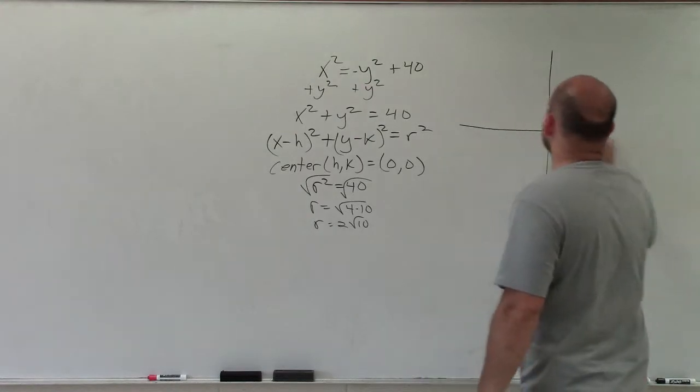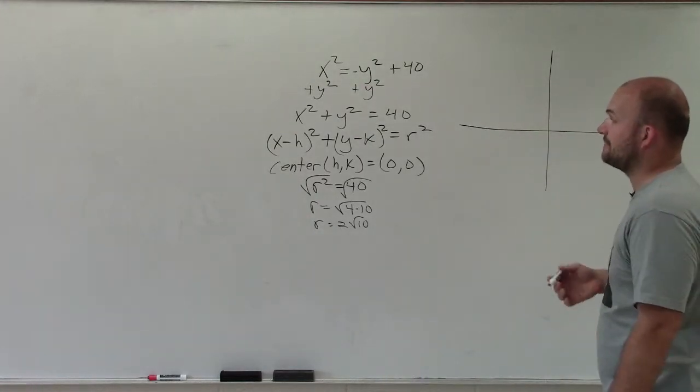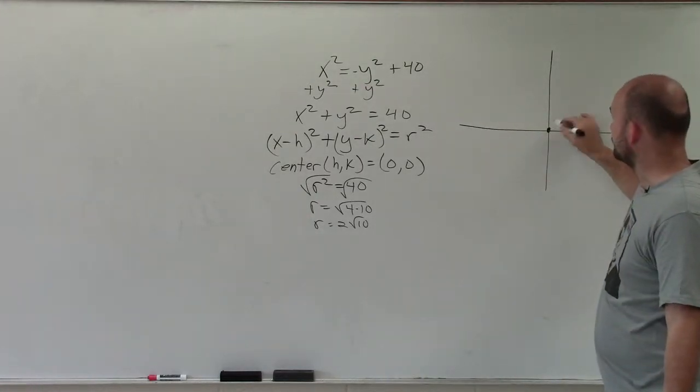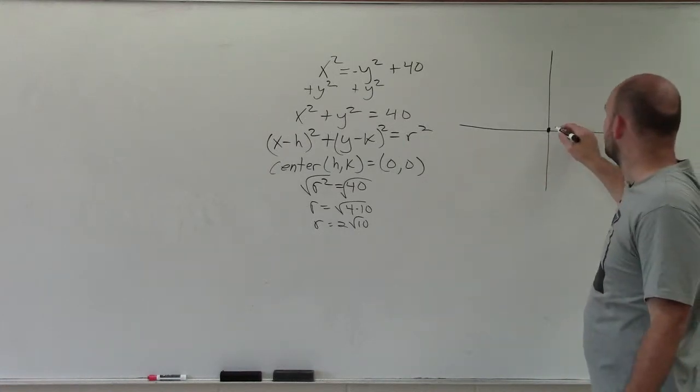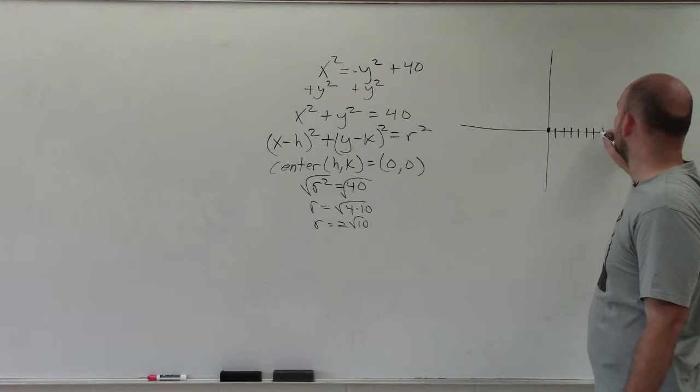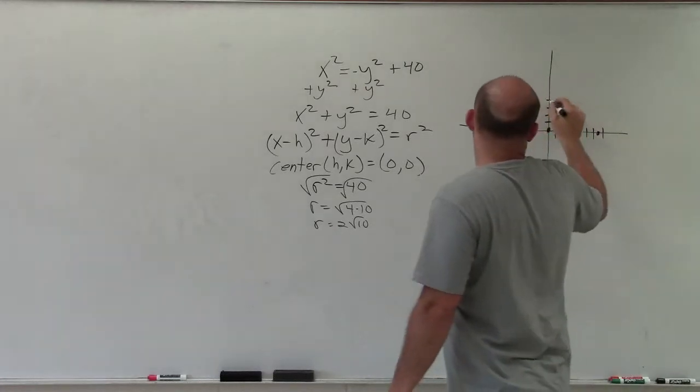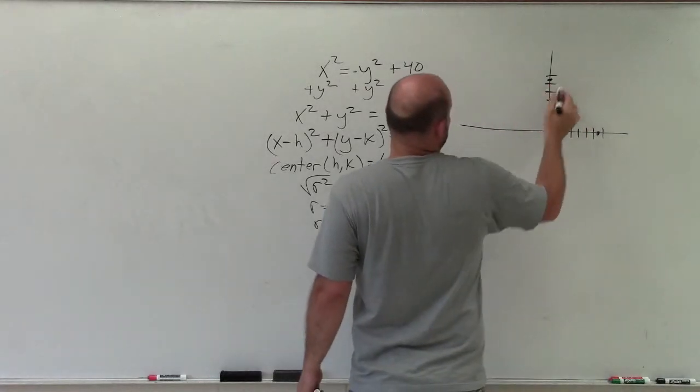All right. So now, let's go ahead and graph. So we determine the center, which is at 0, 0. And then I just go out the radius, which I said was like 6 point something. So 1, 2, 3, 4, 5, 6, 7 in each direction. So I'm just going between 6 and 7.